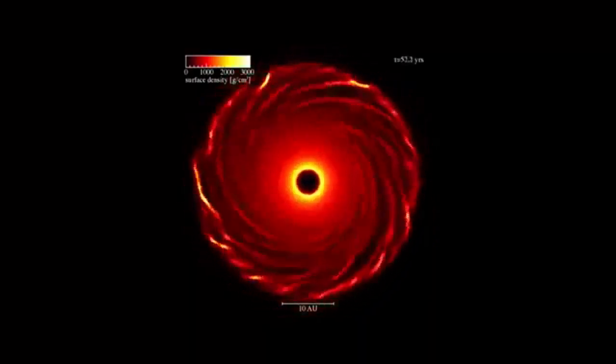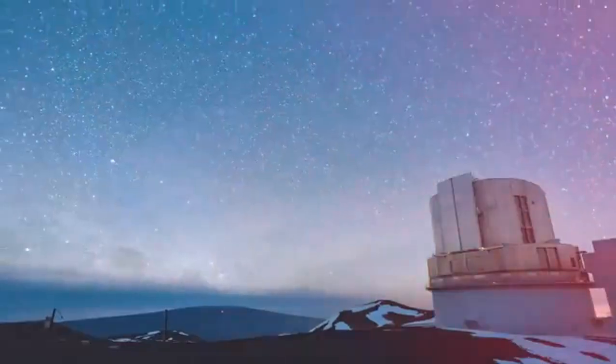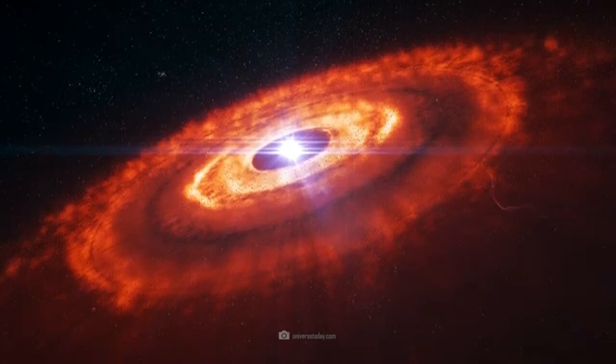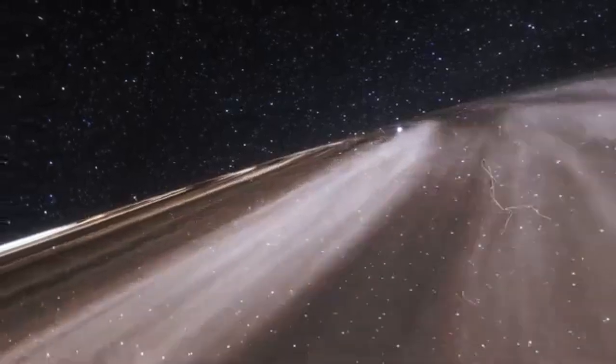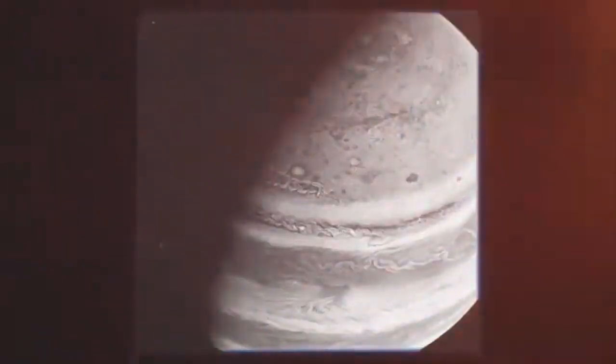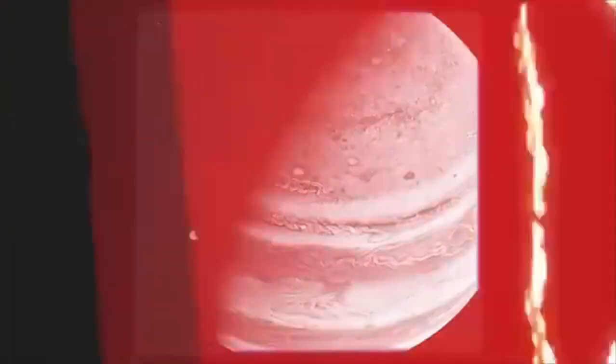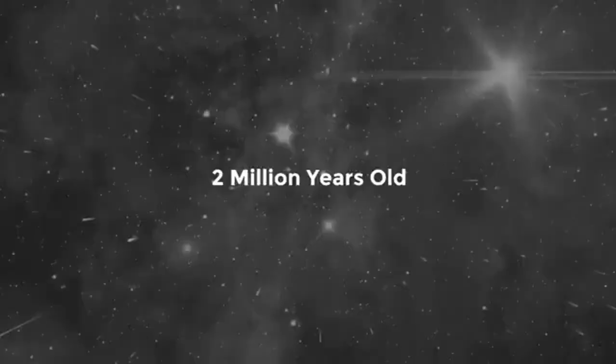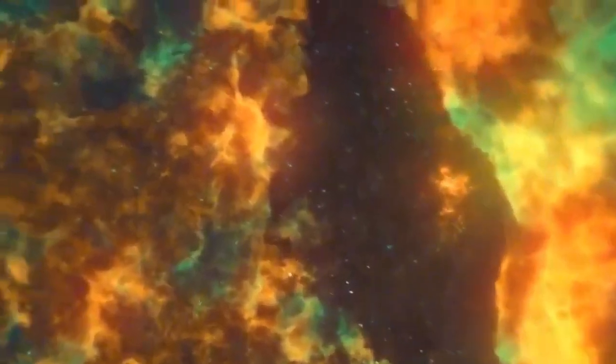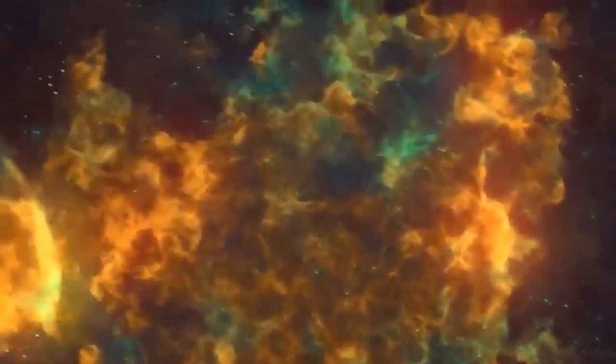One planet that stands out is J1407b, also known as Super Saturn. This exoplanet boasts a ring system that makes our Saturn's rings look pale in comparison. If transferred to our solar system, these rings would be visible from Earth. However, the gravitational pull of this planet with its extreme rings is so great that being nearby would be perilous. The formation of this gigantic ring system remains a wonder of the universe. These discoveries showcase the incredible beauty and extreme diversity of our cosmos, highlighting the vast array of wonders beyond our solar system.